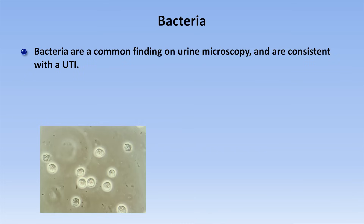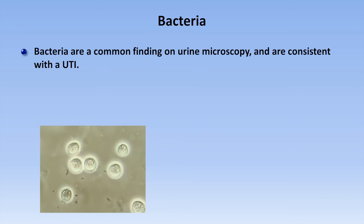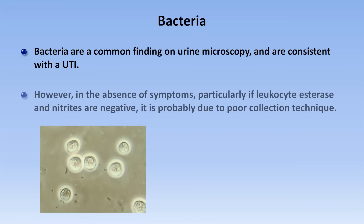Bacteria are a common finding on urine microscopy and are consistent with a UTI. You can see the rod-shaped bacteria as the tiny elongated shapes next to the white blood cells. However, in the absence of symptoms — particularly if leukocyte esterase and nitrites are negative — the presence of bacteria is probably due to poor collection technique.